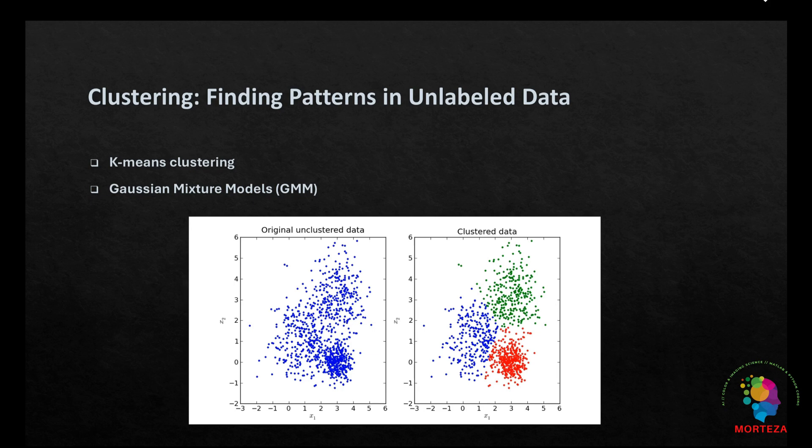Clustering is a core concept in unsupervised learning that groups data points into clusters based on their similarities. The objective is to make sure that data points within the same cluster are more similar to each other than to those in other clusters. Clustering is used in various applications from customer segmentation in marketing to anomaly detection in network security. Two popular clustering methods are k-means clustering and Gaussian mixture models, which we will explain in the context of hyperspectral imaging.